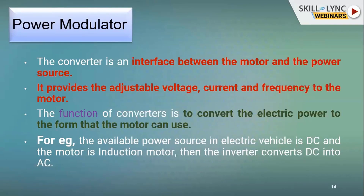The power modulator or converter is an interface between the motor and the power source. It provides adjustable voltage, adjustable current, and frequency. Its main function is to convert electric power into the form the motor can use. For example, in an electric vehicle using an induction motor with a battery, an inverter is required to convert DC into AC. Without the advent of power electronics, modern electric drives would not have been possible.